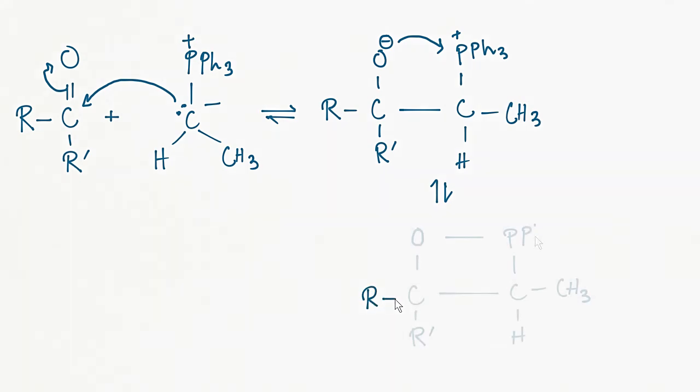This results in a four-membered ring intermediate which is called oxaphosphetane. For many Wittig reactions, this oxaphosphetane forms in one step rather than two. Then the step would be called cycloaddition.